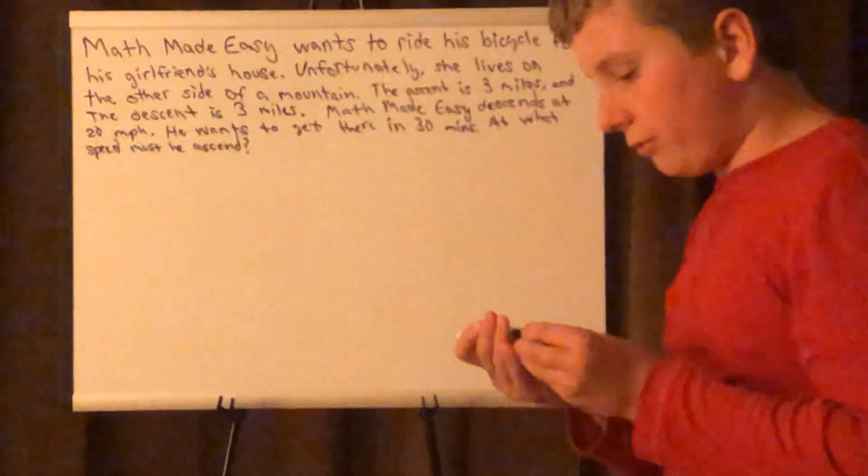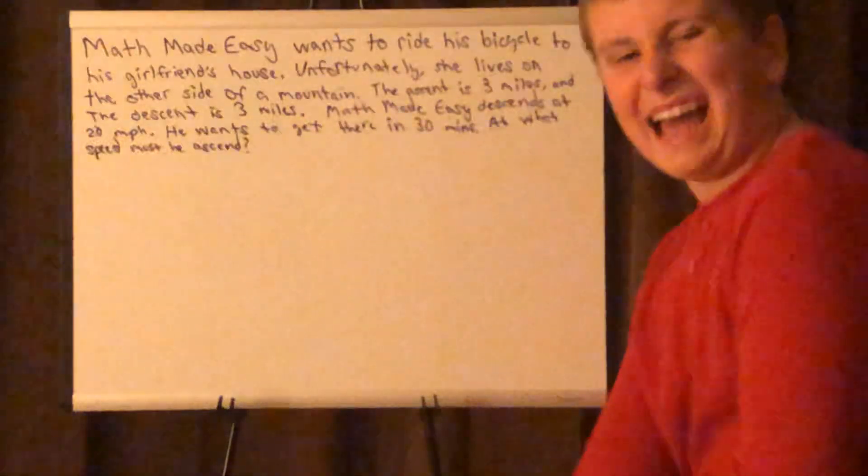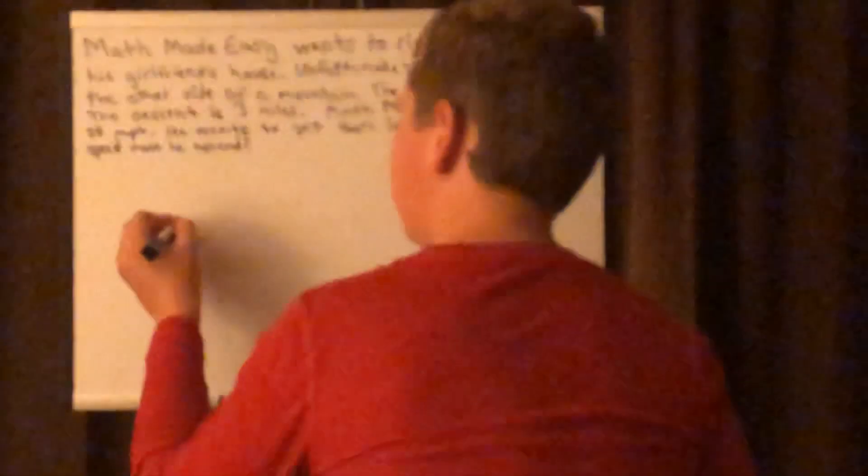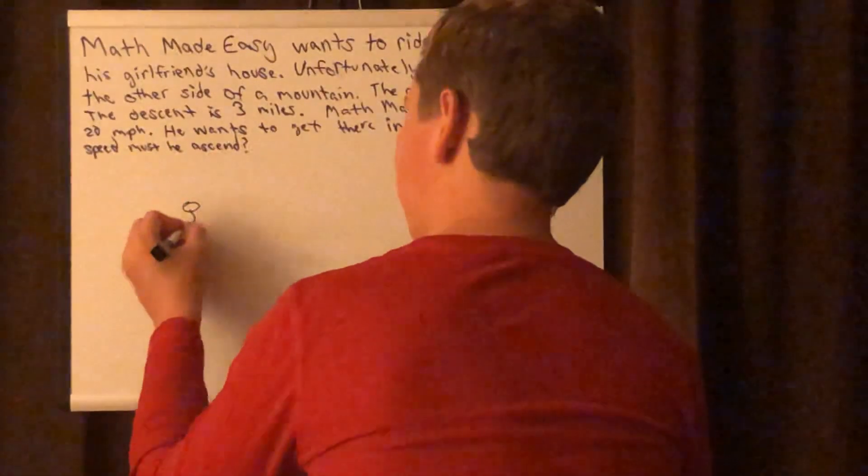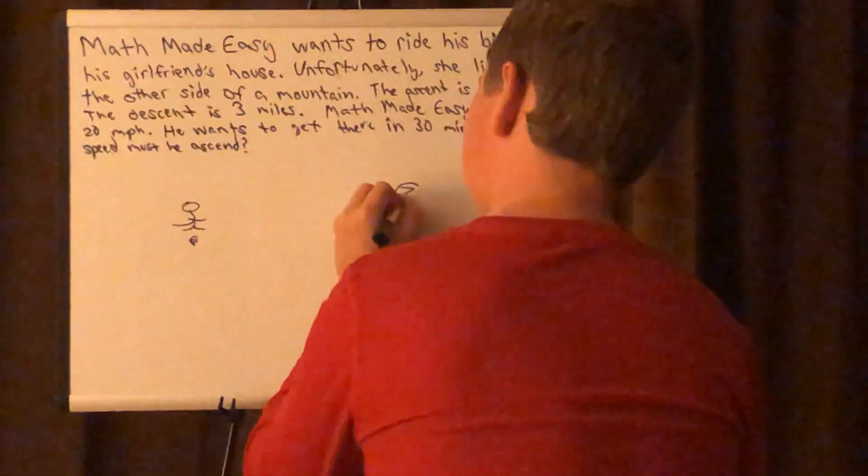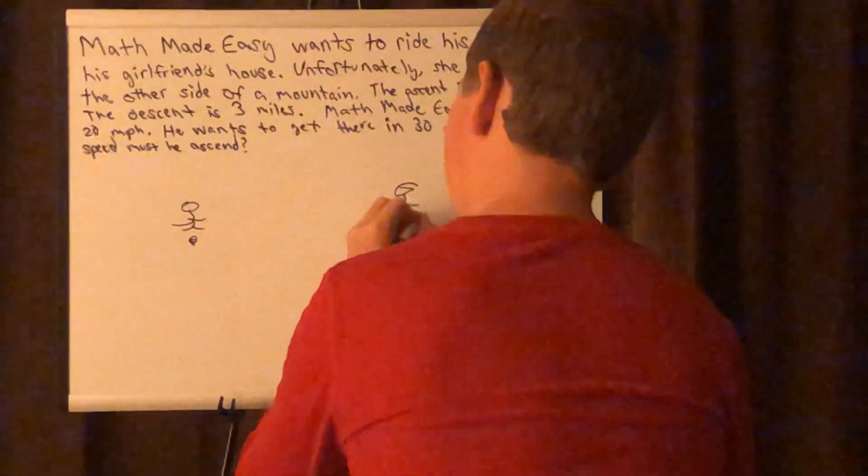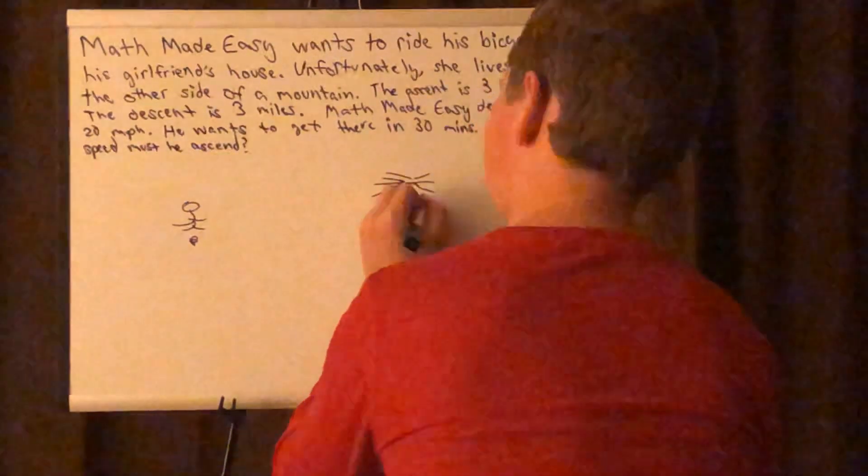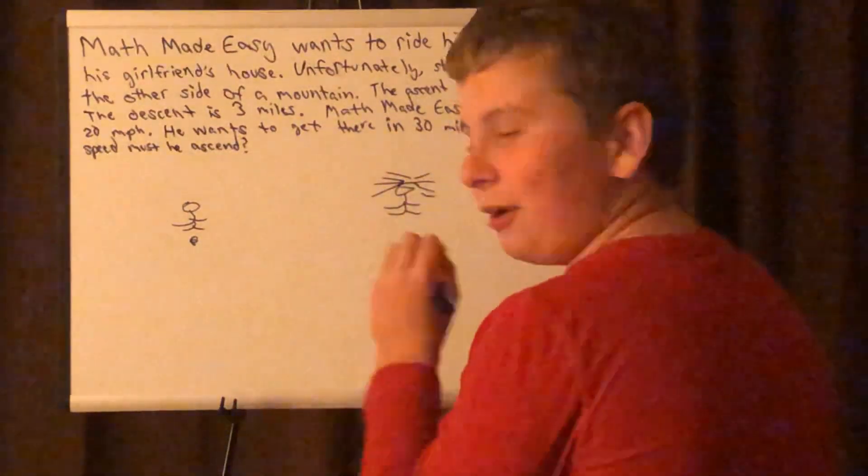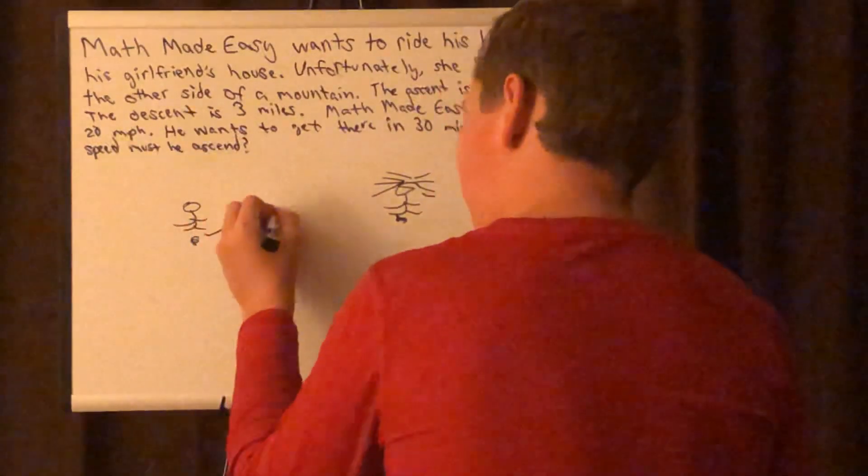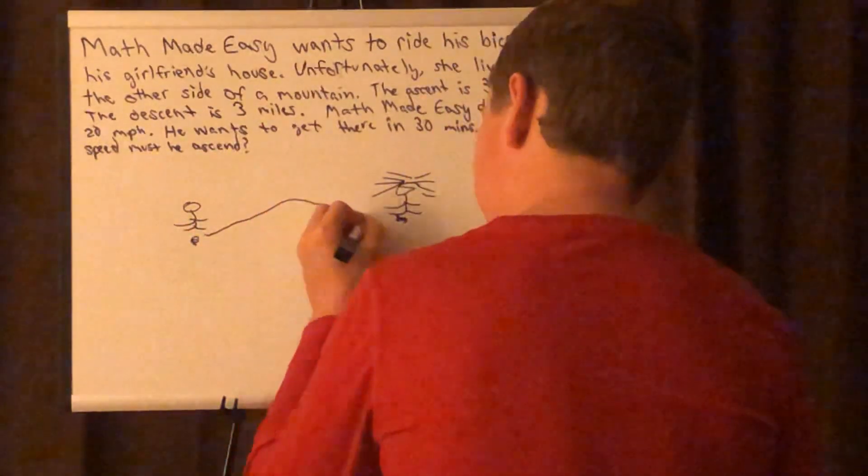So let's draw a diagram first. It helps me when I have a traveling problem like this to draw a diagram. So here is Math Made Easy, here is Math Made Easy's girlfriend's house. You can tell why I don't have a drawing YouTube channel. And he's going to ascend and then he's going to descend, right?